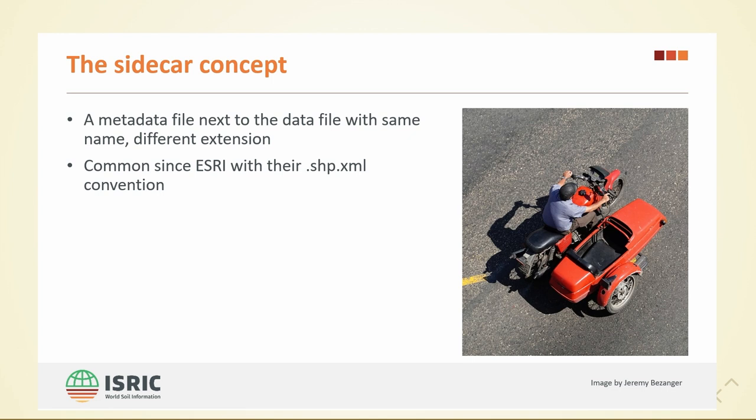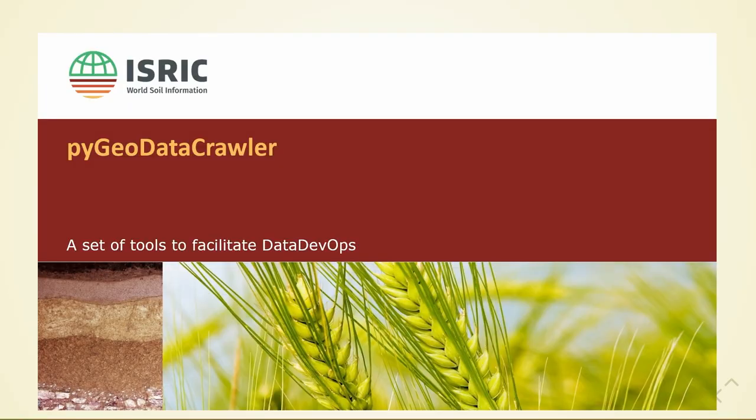Let me first introduce you to the sidecar concept. We have the geo package or the shape file somewhere on our system, and there should always be a metadata file next to that. We introduced that concept in the 90s, or at least they made it big then, and we continue on that. I'm going to present the set of tools we have around this concept to support data DevOps.